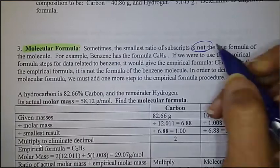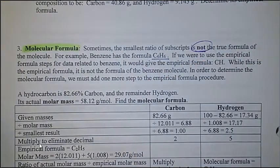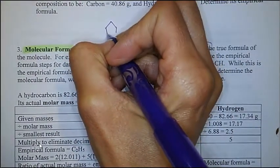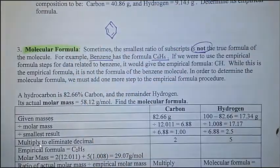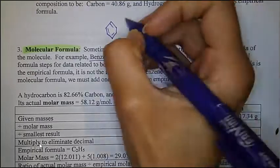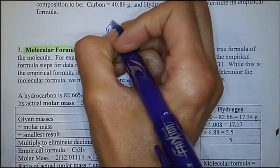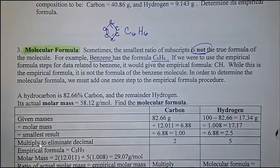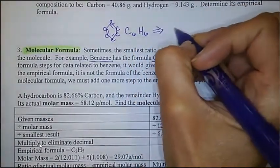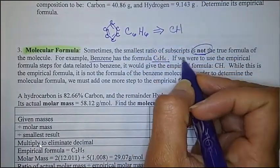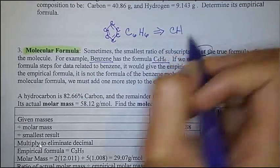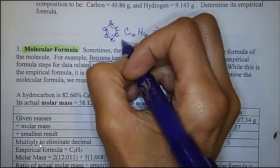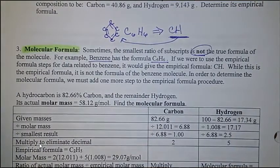Instead, the true formula of the molecule has subscripts that are not reduced. For example, you have benzene right here — this is how benzene looks. Benzene is C6H6: 6 carbons with 6 hydrogens. Clearly we can reduce that into the smallest ratio of subscripts and it would be CH. But notice that this formula is very different from the actual molecule of benzene.